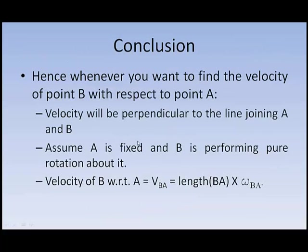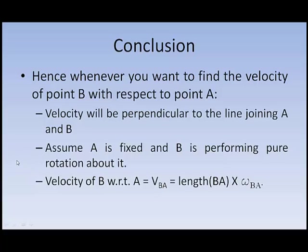So these are the three things to remember after this video: whenever you want to find the velocity of B with respect to A, the velocity will always be perpendicular to the line joining A and B; you have to assume that A is fixed and B is performing pure rotation about it; and therefore the velocity of B with respect to A is given by the formula — length of BA into angular velocity of BA. In the next video, using these three points, we will see how to draw a velocity diagram. Thank you.